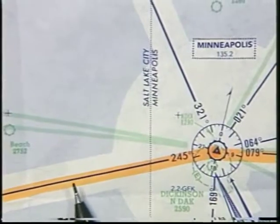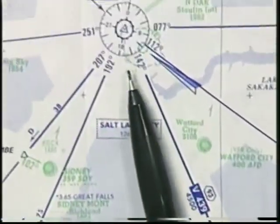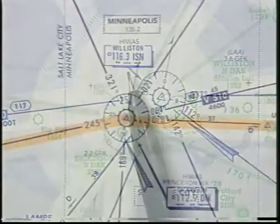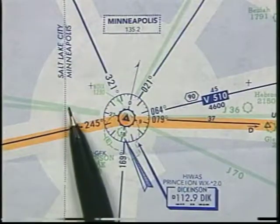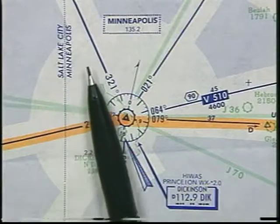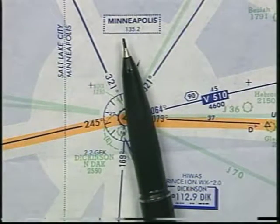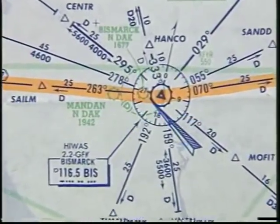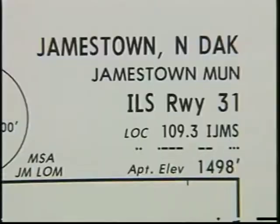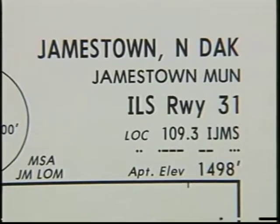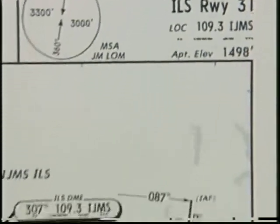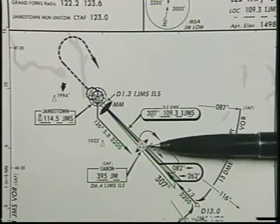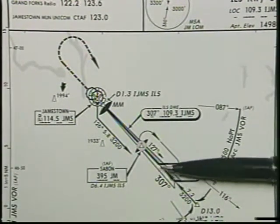While on the airway, you know that you won't be able to receive DME from Dickinson, so you'll need to determine your position by tuning in Williston on 116.3. When within 20 miles of Dickinson, you'll likely be told to contact Minneapolis Center on 135.2. Over Bismarck, you'll want to check the weather in case you have to divert back there if you can't get into Jamestown. With the winds at Jamestown, you figure you'll be cleared for the localizer approach to runway 31.